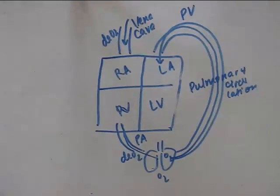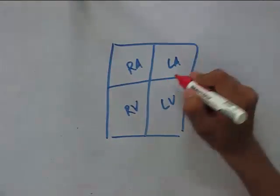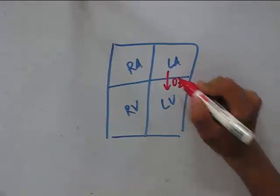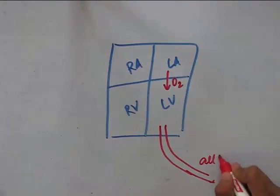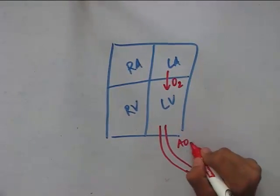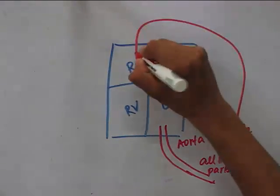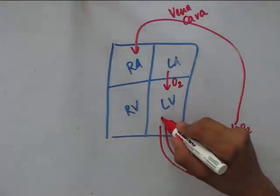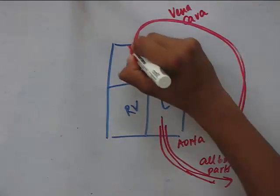Now let us look at the systemic circulation — the circulation to all the body parts. The oxygenated blood from the pulmonary veins enters the left ventricle through the bicuspid valve. From there, it is transported to all the body parts through the aorta. There is tissue exchange and release of deoxygenated blood, which is then drained into the right atrium through the vena cava. The flow of blood from the left ventricle to all body parts through the aorta, and deoxygenated blood from all body parts back to the right atrium through the vena cava, is known as the systemic circulation.